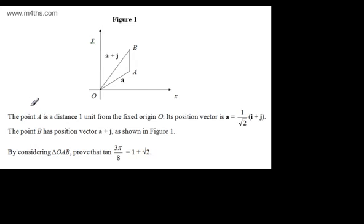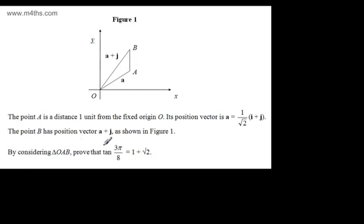In this question, we're told that point A is a distance of 1 unit from the fixed origin O. Its position vector is A, which is 1 over root 2, the quantity I plus J. The point B has position vector A plus J as shown in figure 1. By considering the triangle OAB, prove that tan of 3π/8 is equal to 1 plus root 2.